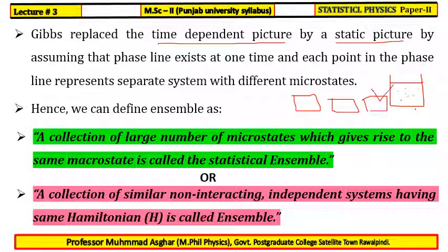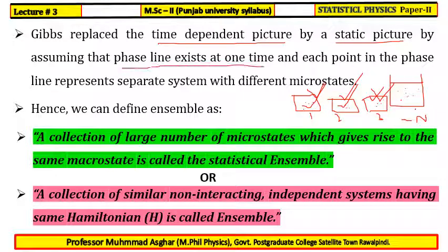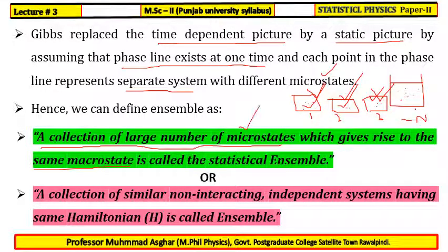We consider N systems, all containing a large number of molecules. Microstates are changing but macro states are the same. All these systems have different microstates but the same macro states. The average can be taken over systems one through N at the same time. Each point on the phase line represents a separate system with different microstates. A collection of large numbers of microstates gives rise to the same macro state.